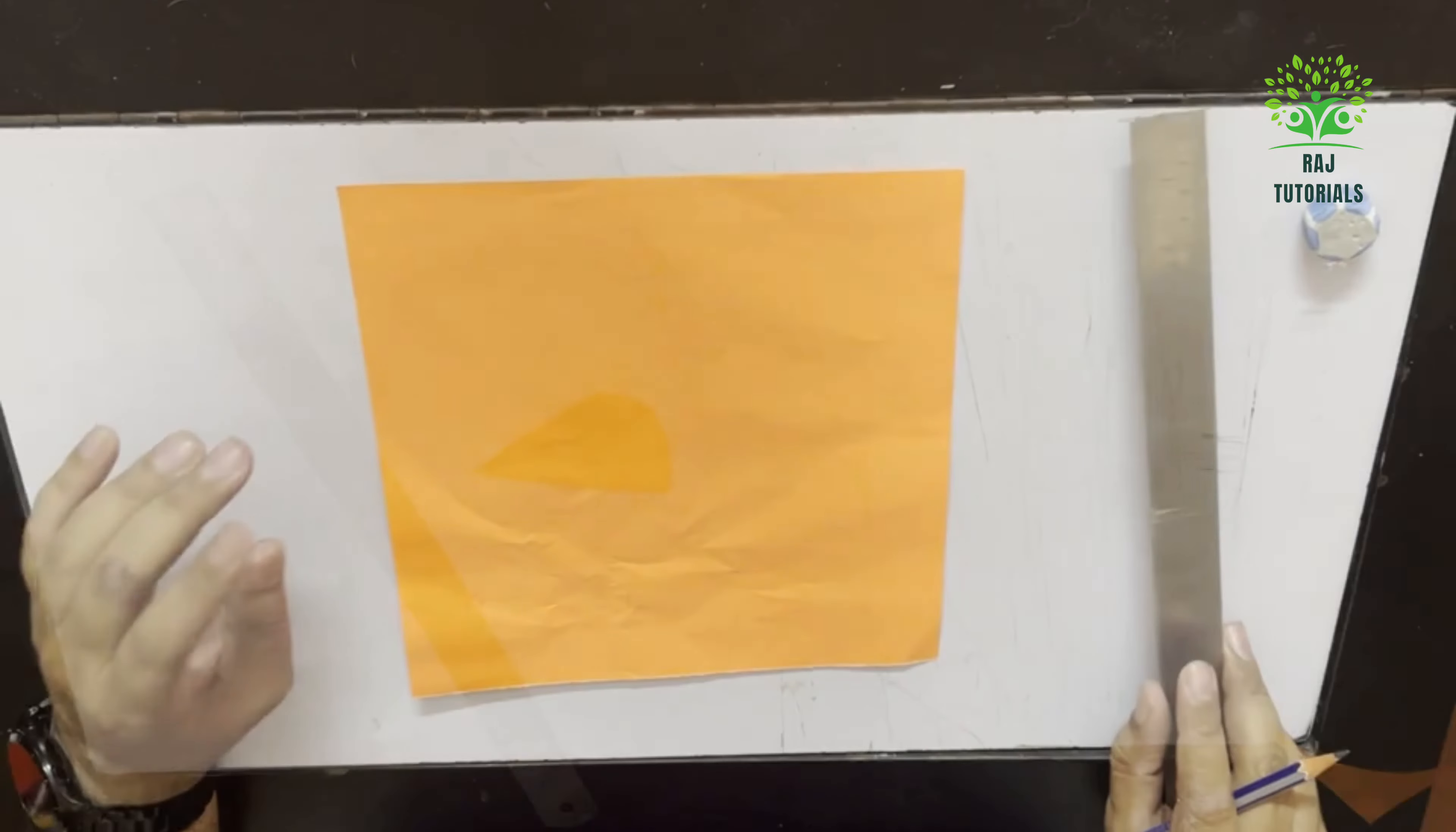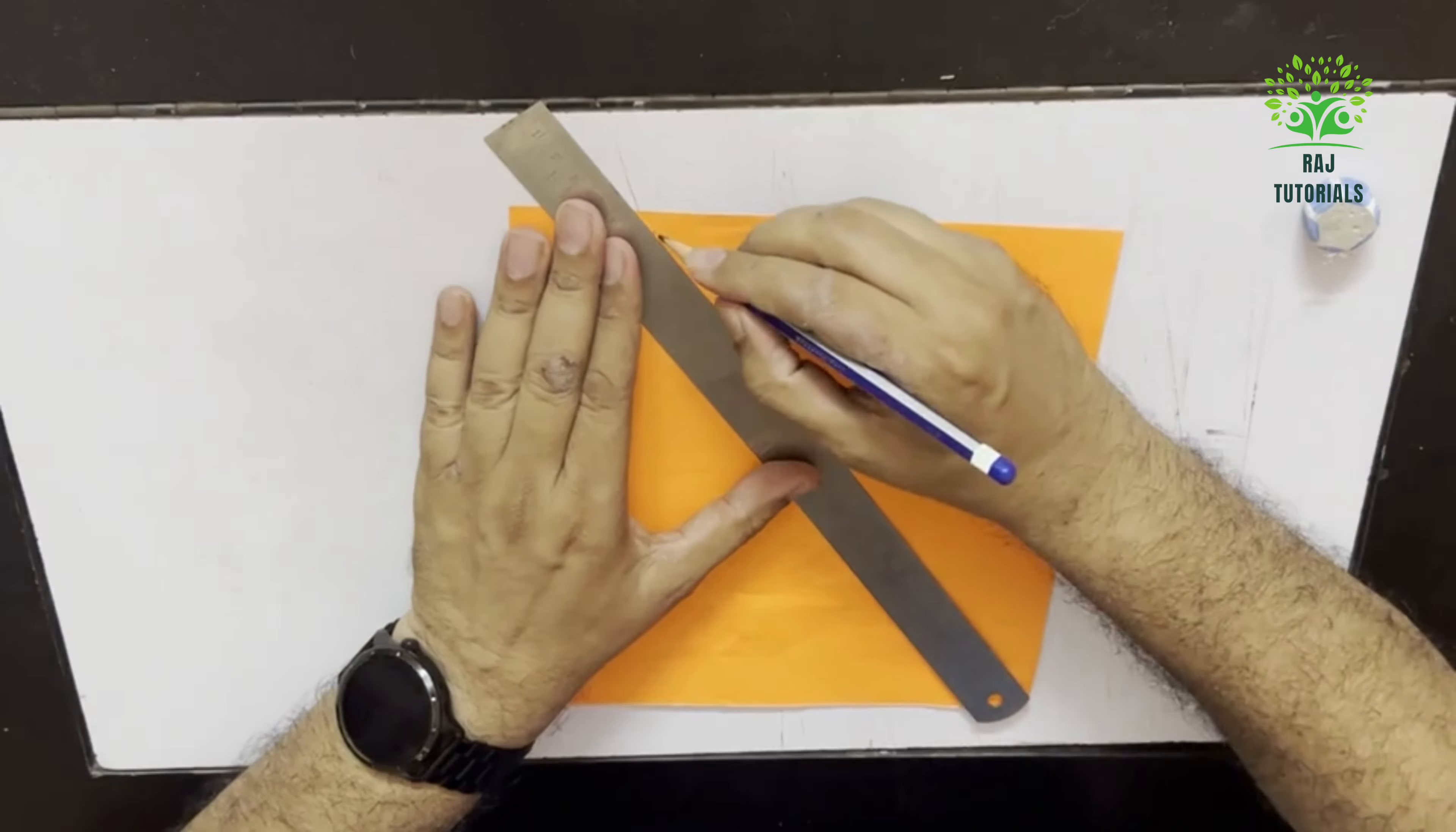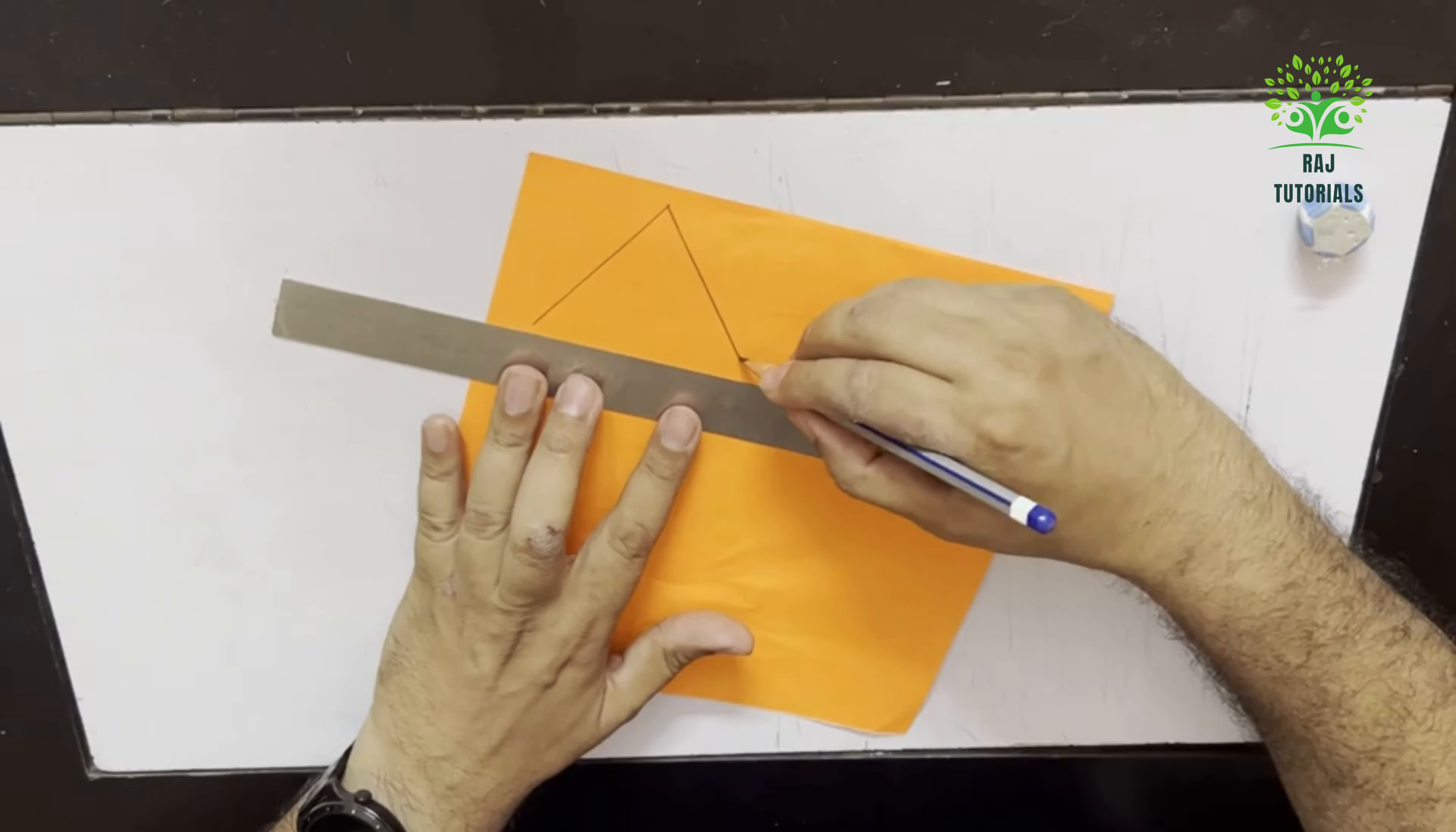Now, the activity is median of a triangle. So, first he is asking us to draw any triangle. So let me draw one triangle and the triangle is of any measurement. I am not taking the measurement equal or anything specific.